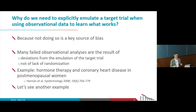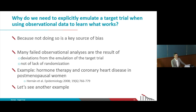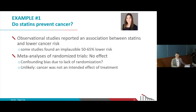One example is hormone therapy and coronary heart disease in post-menopausal women. We've described this in the literature in detail: the observational data was perfectly good, and in fact you can use that data to replicate what the trials found. But because it wasn't used in the right way, there was a problem. Rather than going over that example, I'll go over a more recent example based on work that Barbara Dickerman led — one that cannot be due to confounding or lack of randomization.